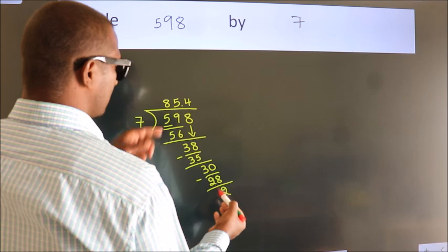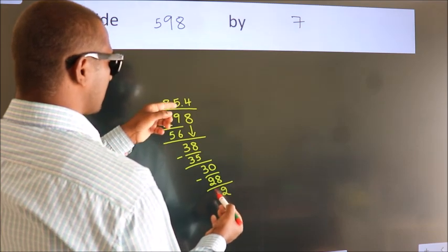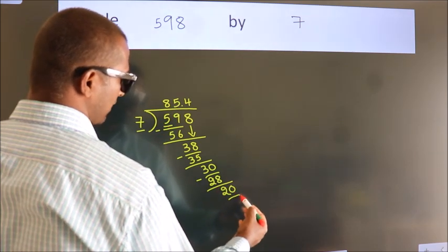After this, we already have the decimal, so directly take 0. So, 20.